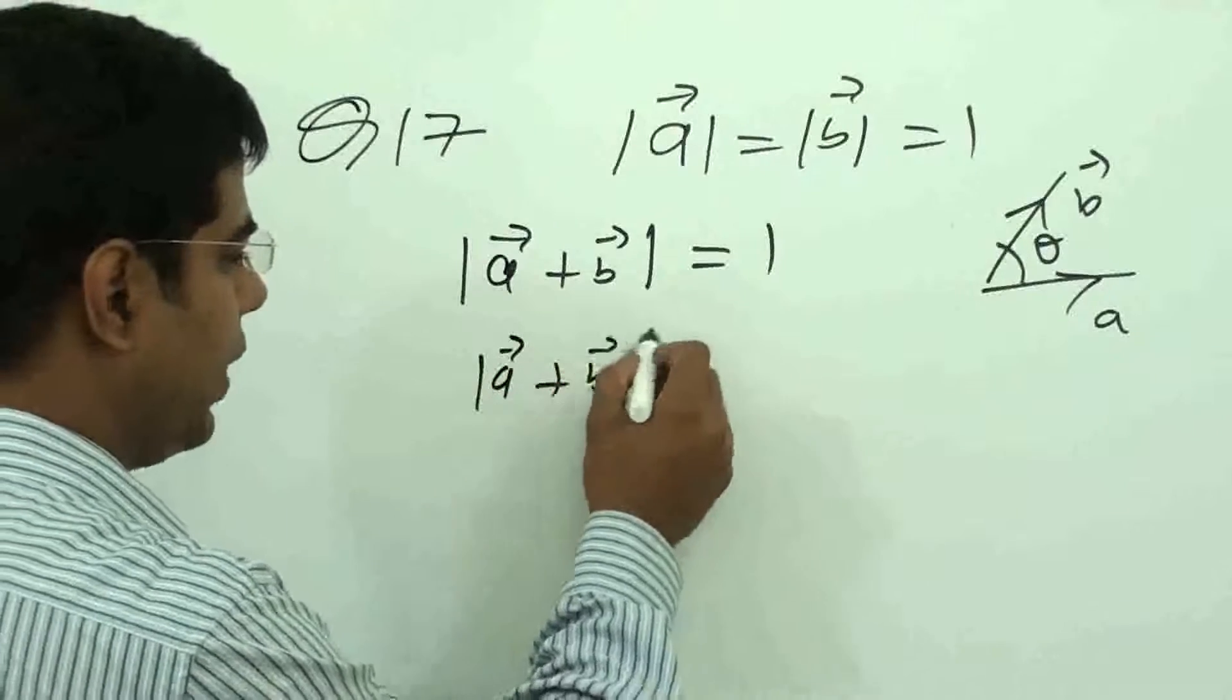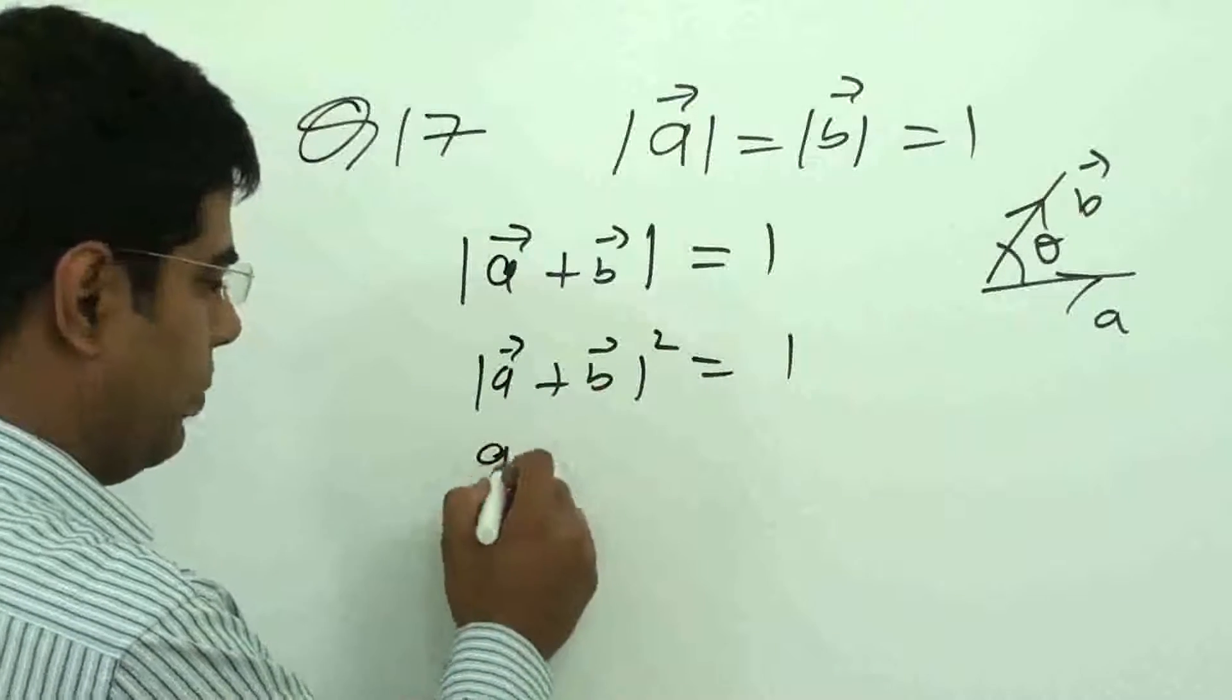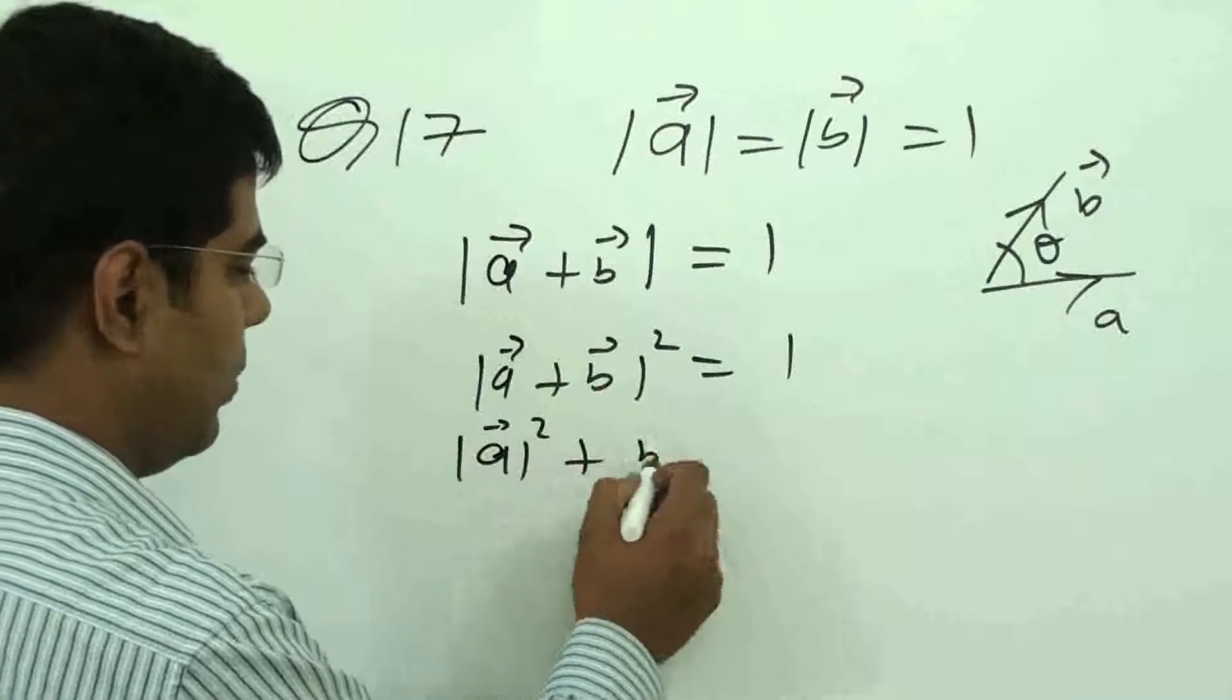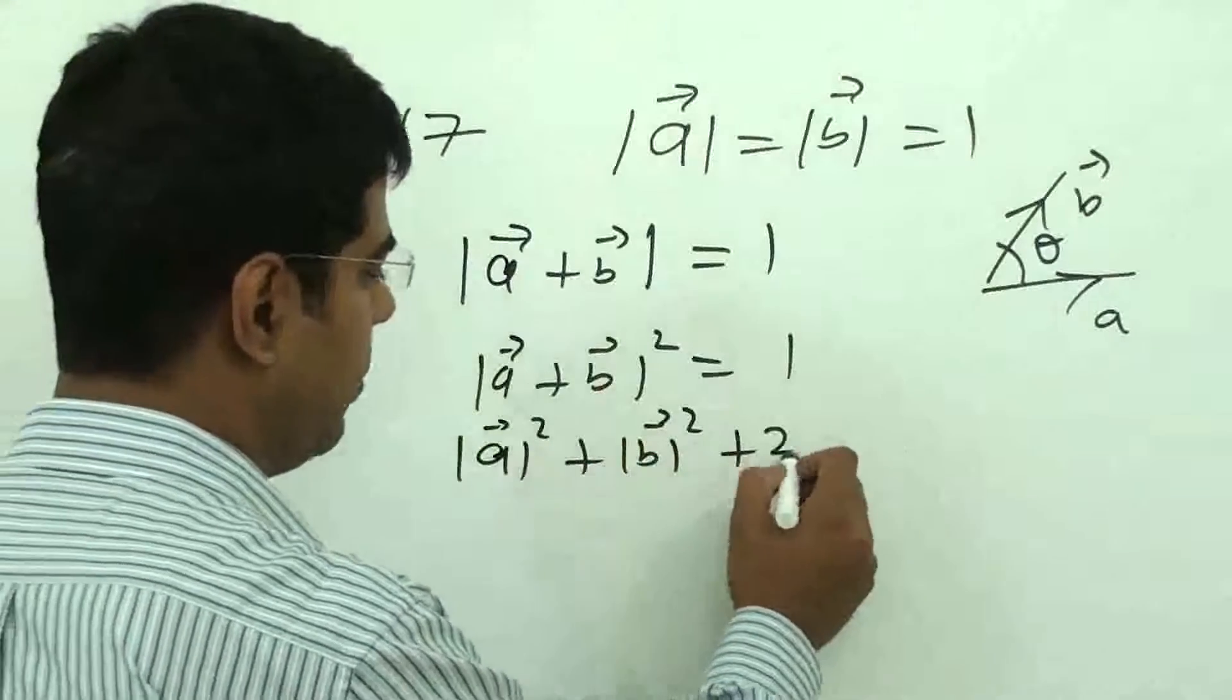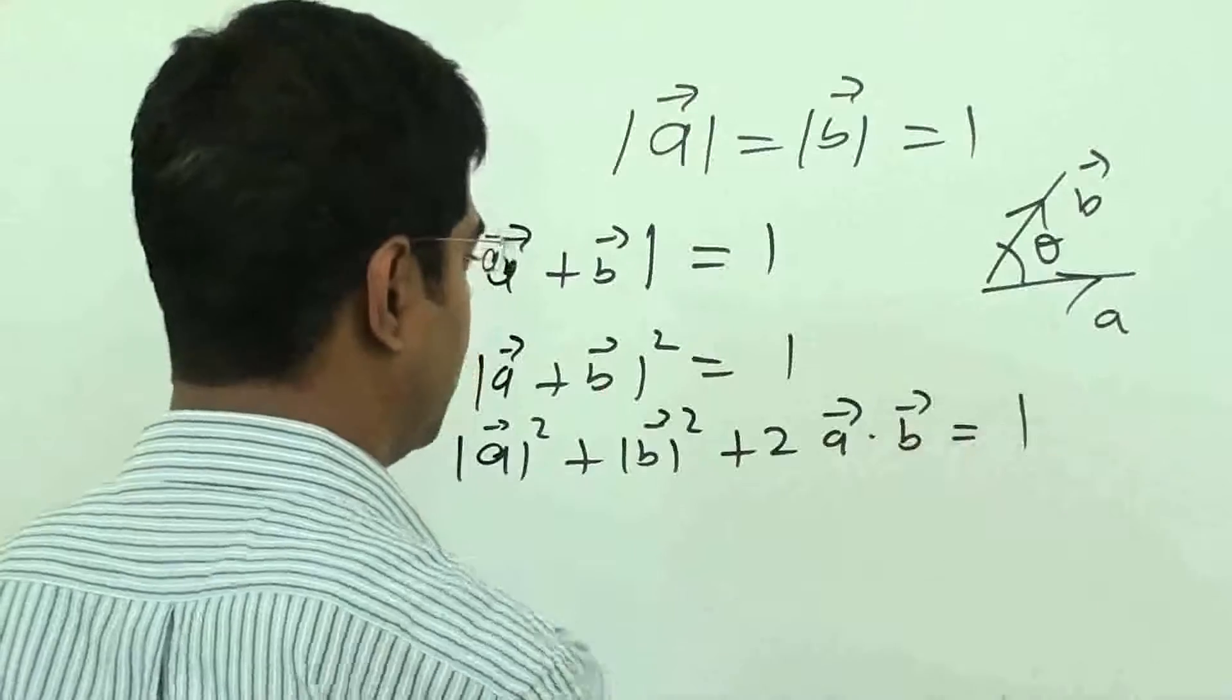A plus B vector squared is 1. Mod of A square, mod of B square plus 2 times A dot B is equal to 1.